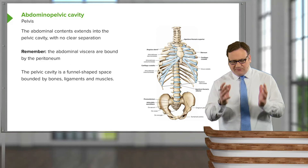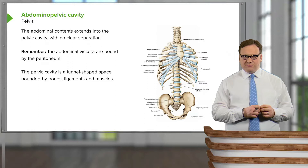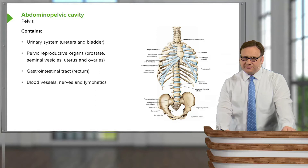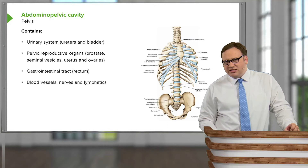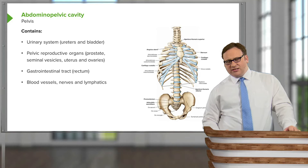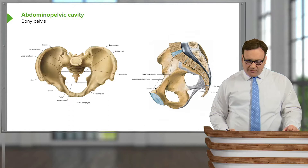The pelvic cavity is a funnel-shaped space bounded by bones, ligaments, and muscles. It contains the urinary system — the ureters and the bladder — and pelvic reproductive organs. In the male, we have the prostate and seminal vesicles; in the female, we have the uterus and ovaries. It also contains the distal part of the gastrointestinal tract, the rectum.